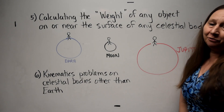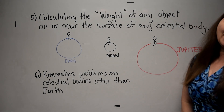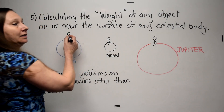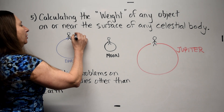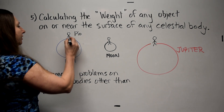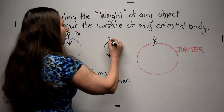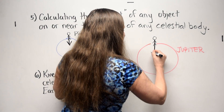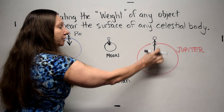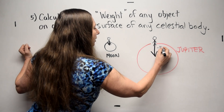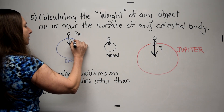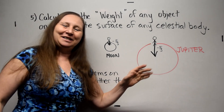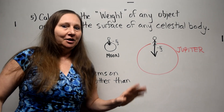Finally, we will revisit calculating the weight of any object on or near the surface of any celestial body. On Earth, let's say Pio has a certain weight. On the Moon, he would weigh less. On Jupiter, he would weigh more. You can see that the weight vector arrow is largest for Jupiter, medium for Earth, and smallest for the Moon. Jupiter is a gas giant — you can't really stand on the surface of Jupiter — but let's make believe.